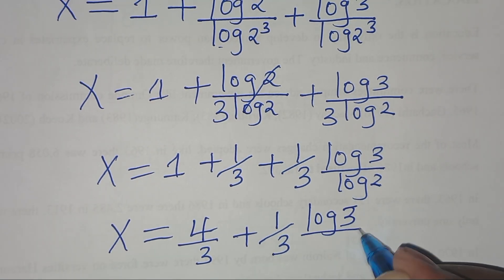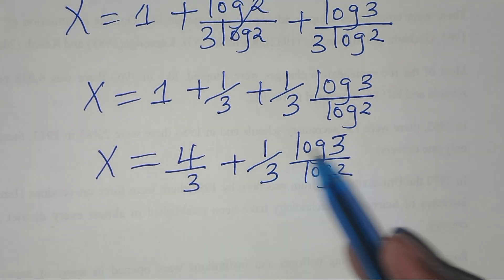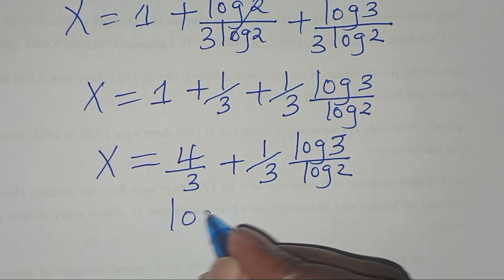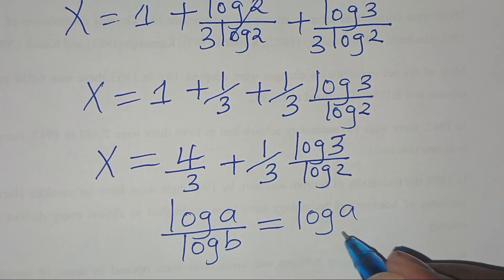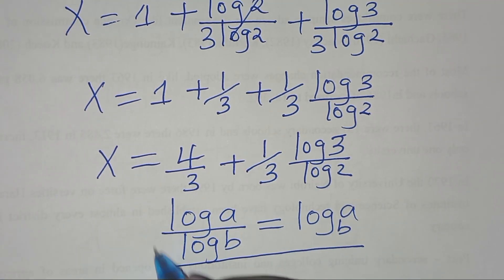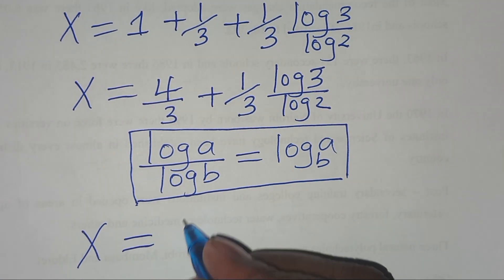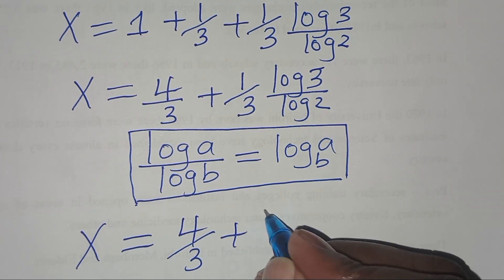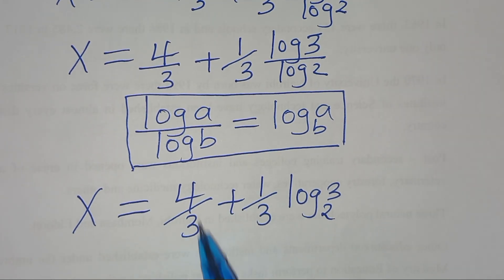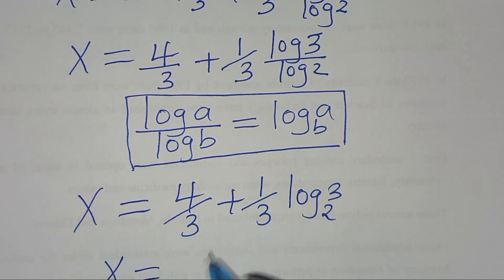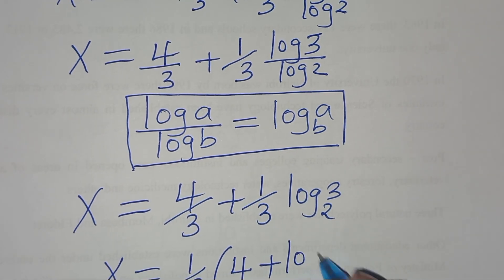The next step: ln(3) divided by ln(2) is in the form of ln(a) divided by ln(b), which we can express as log base b of a. Applying this property, then we can express x as 4/3 plus 1/3 times log base 2 of 3. Since 1/3 is common, we can express x as (1/3)(4 + log base 2 of 3).